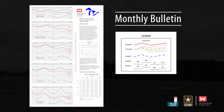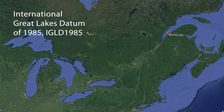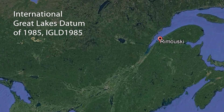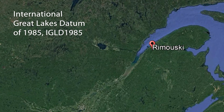The water levels in the Monthly Bulletin are shown to the chart datum for each lake. There is a distinct chart datum for each lake which is shown on each graph. These datum planes have fixed elevations relative to the International Great Lakes Datum of 1985. The IGLD 1985 has its zero base at Rimouski, Quebec, near the mouth of the St. Lawrence River.